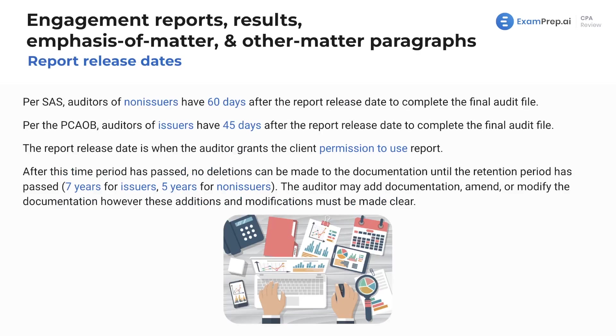Talking about the report release dates — this is something we've covered in another lesson and I want to reiterate it here. Make sure you've got these points memorized. Generally, if you are a private entity following the AICPA — not a public company, not an issuer — you're going to have more lax rules. Per statements on auditing standards, auditors of non-issuers have 60 days after the report release date to complete the final audit file.